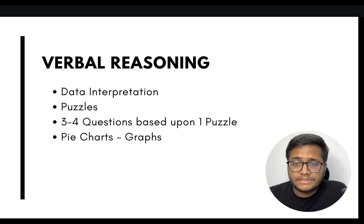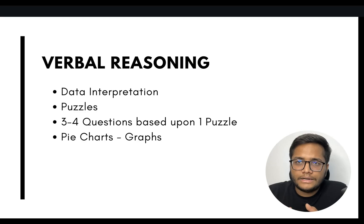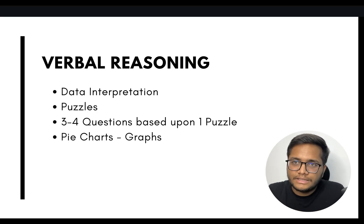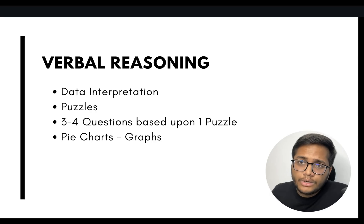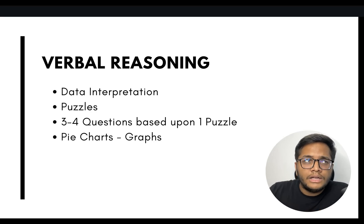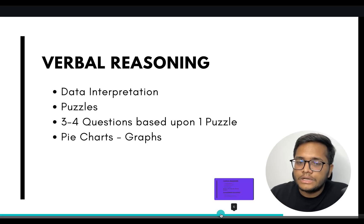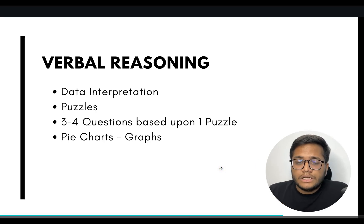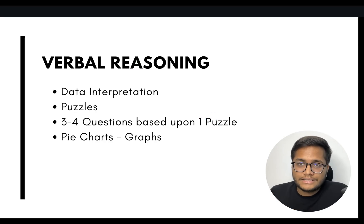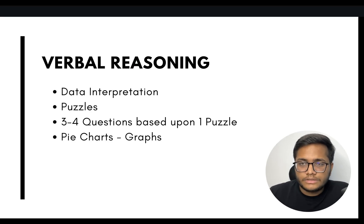The verbal reasoning section includes data interpretation puzzles — three to four questions based on one puzzle — and pie chart or graph-based questions. There might be a case study where two groups have differing opinions shown via a pie chart. Seating arrangement questions are also common, such as a group of friends sitting in a circle where you need to identify positions. This section is scoring but you often have very little time left, so try to attempt it earlier.